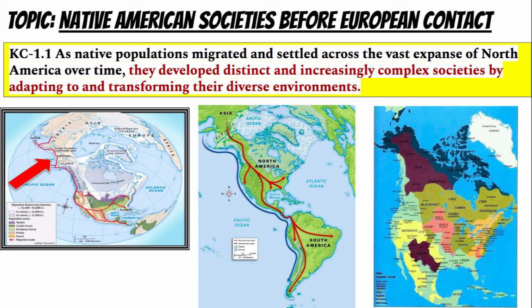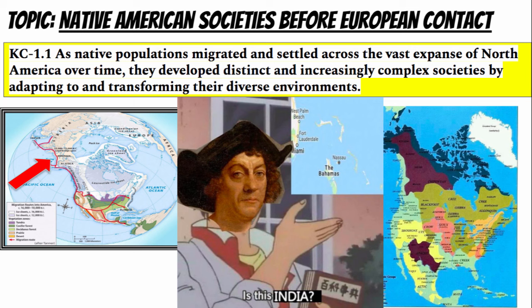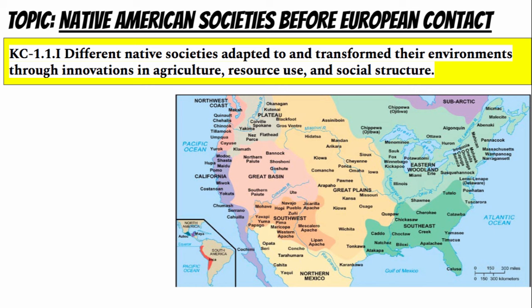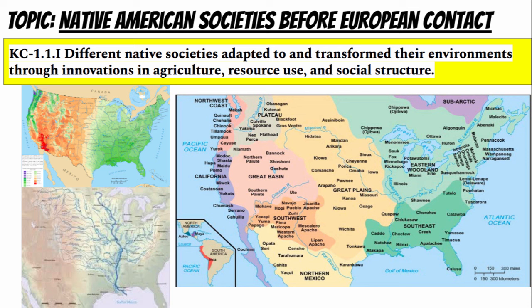We use the term pre-Columbian societies because this is the period before some folks thought Columbus in 1492 discovered part of India. In this process, different societies adapted to and transformed their environments through innovations in agriculture, resource use, and social structure.